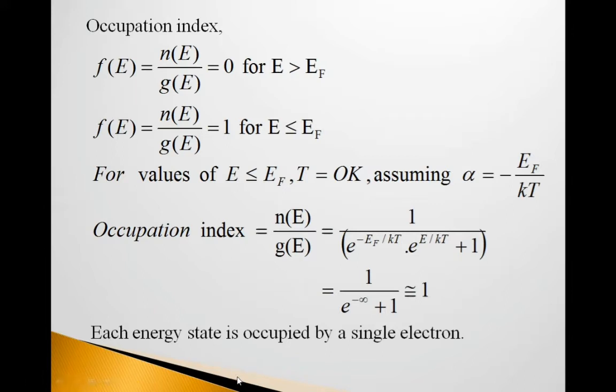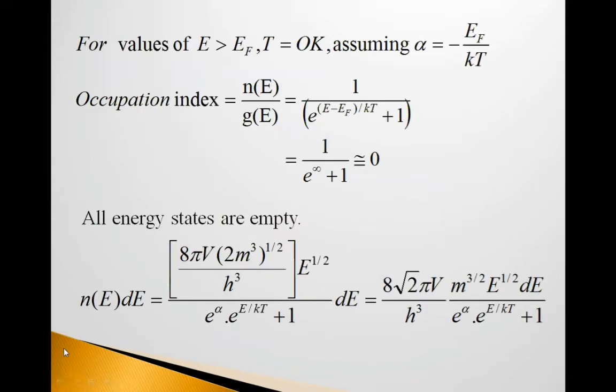For values of E greater than EF and T equal to 0 Kelvin, assuming α equal to minus EF upon kT, occupation index is equal to n(E) upon g(E) equal to 1 upon e raised to E minus EF upon kT plus 1. As E is greater than EF, this is positive term. So, e raised to infinity plus 1. 1 upon e raised to infinity plus 1 is approximately 1 upon infinity is 0. So, all energy states are empty.